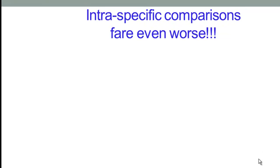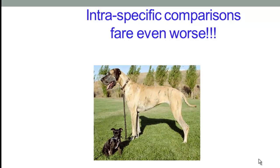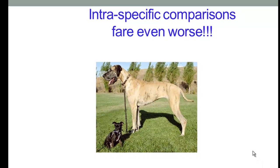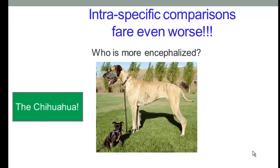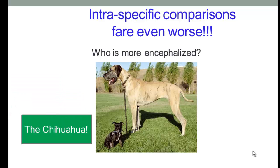If we go to intraspecific comparisons, say among human beings, those fare even worse. So here's a photo of a Chihuahua and a Great Dane. And if we used an isometric index here, who has the greater encephalization quotient? And it turns out by some lead, it's the Chihuahua. And the reason for this is that body size changes more than brain size. So when we do comparisons of brain size and body size within a species, like dogs or humans, body size can change much more dramatically than brain size.